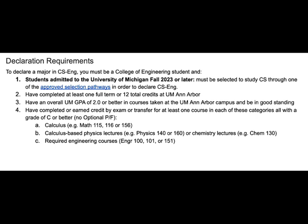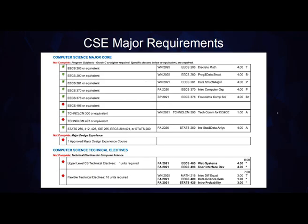The computer science and engineering major requirements include completing a minimum of 58 credits. This does not include prerequisites. All major required courses must be taken for a letter grade and the student must receive a C or better to satisfy the major requirements. The program's major core requirements include EECS 203, EECS 280, EECS 281, EECS 370, EECS 376, and statistics. There are multiple ways to satisfy the statistics requirement, which you can find listed under the program core section in the CS Eng program guide, or you can meet with an advisor if you have additional questions.